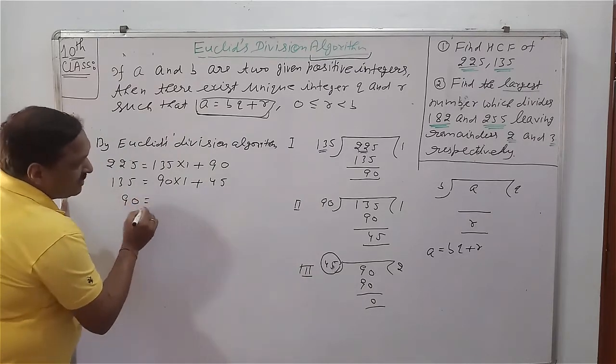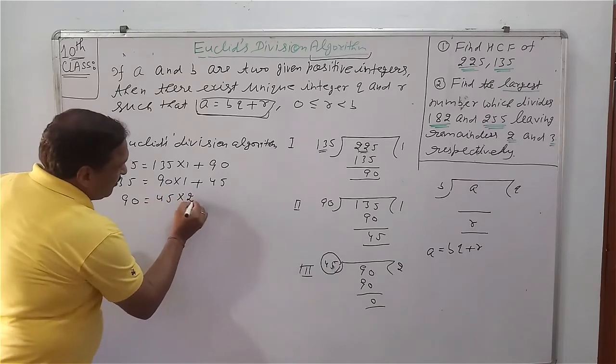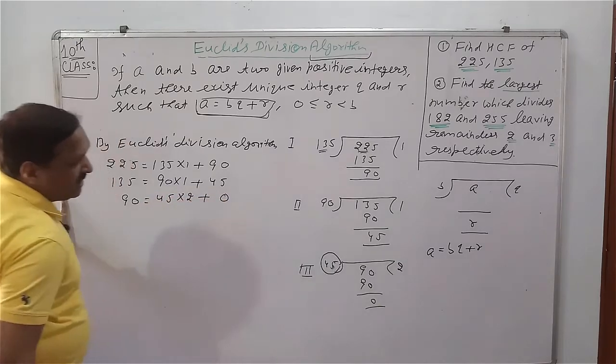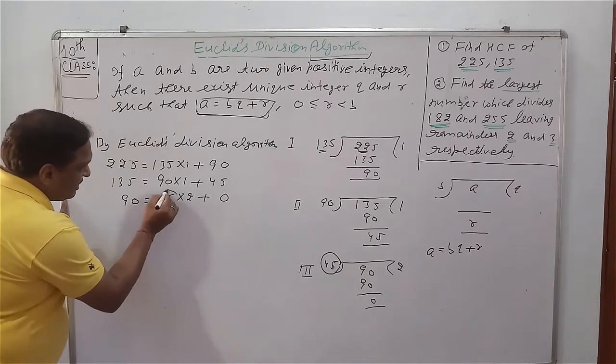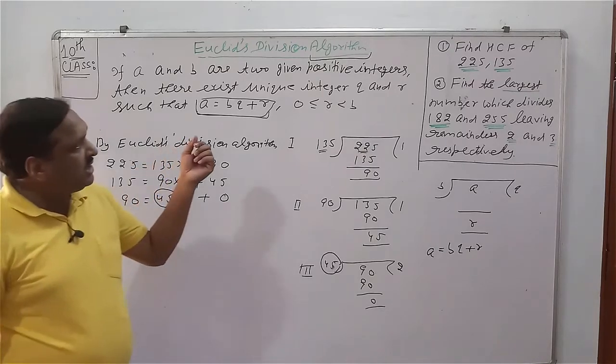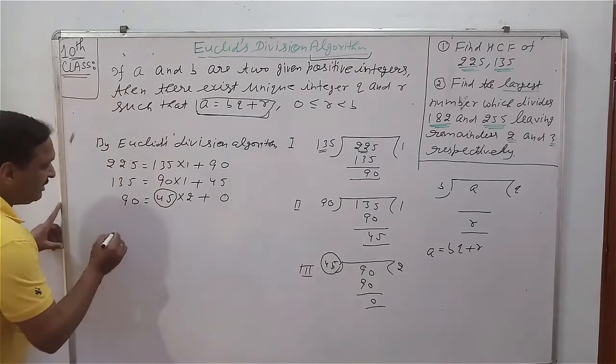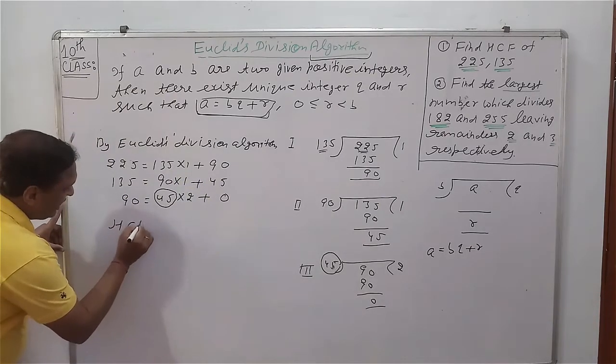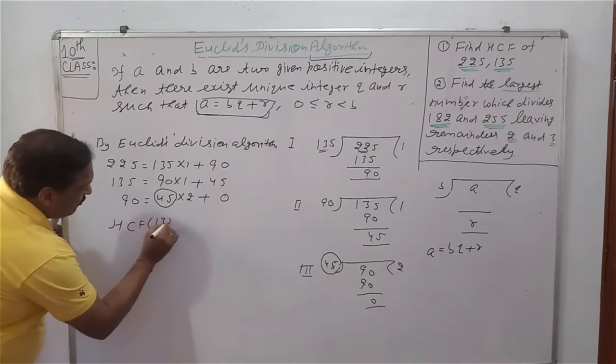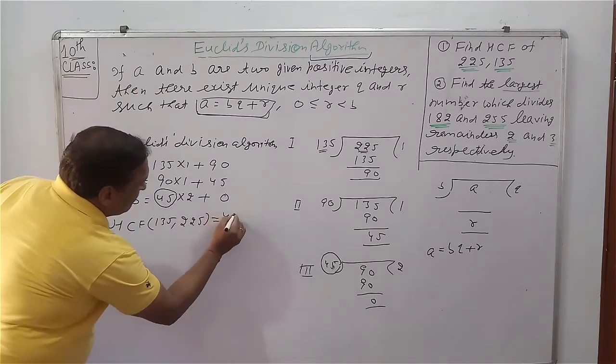Q is 1 and R is 45. Similarly in third step, A is 90, B is 45, Q is 2 plus remainder 0. And your last divisor is highest common factor that divides both given numbers 135 and 225.